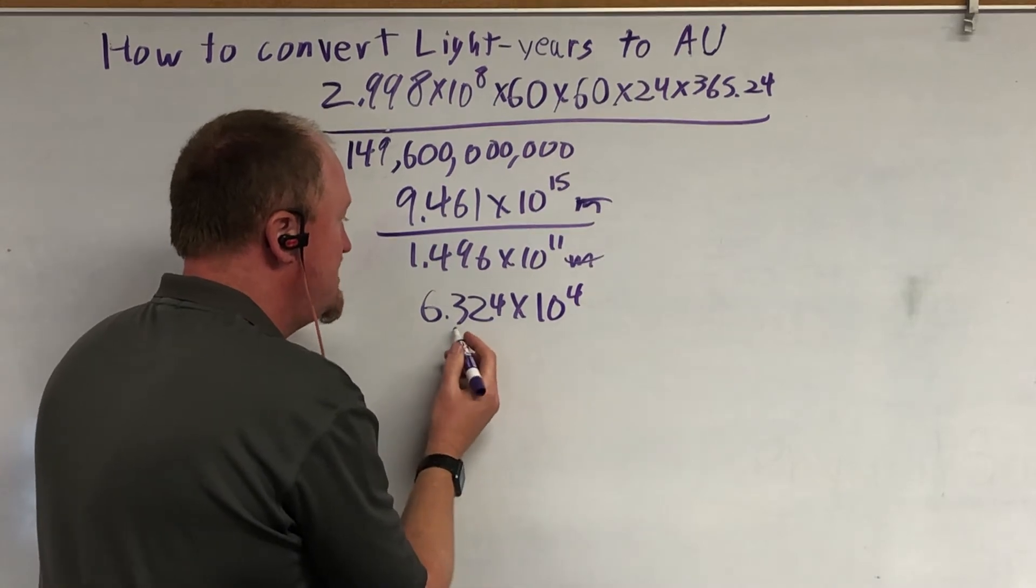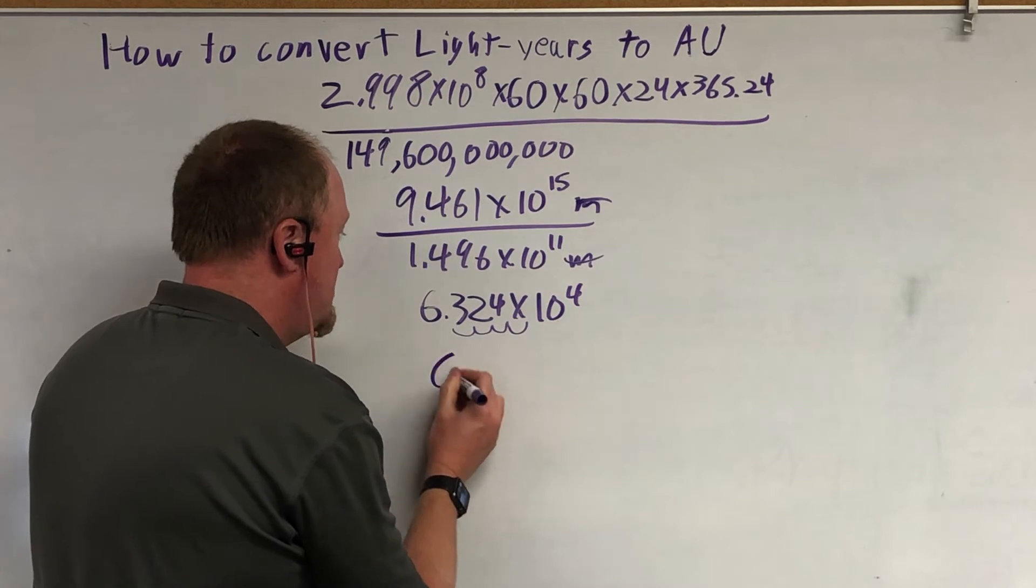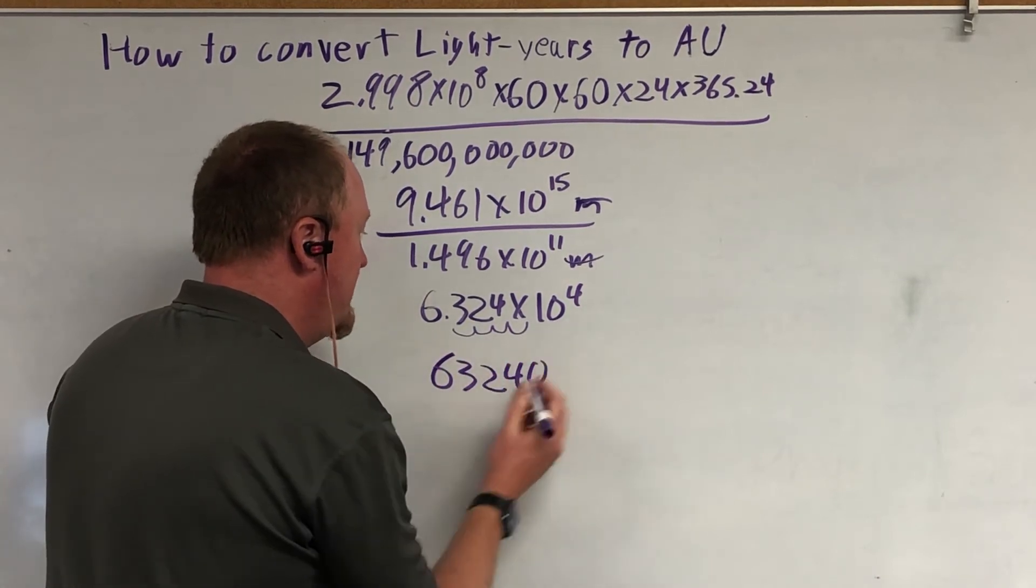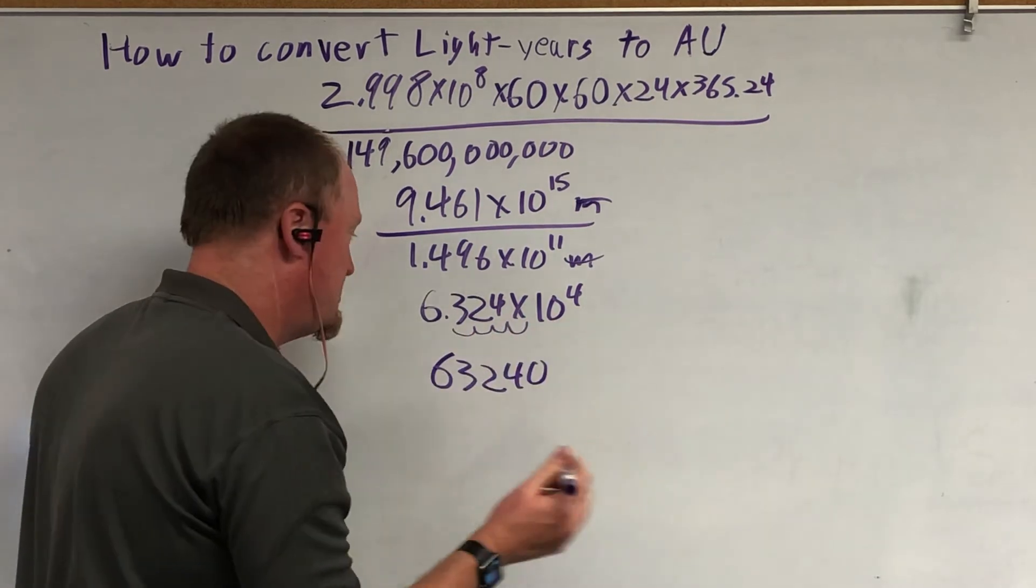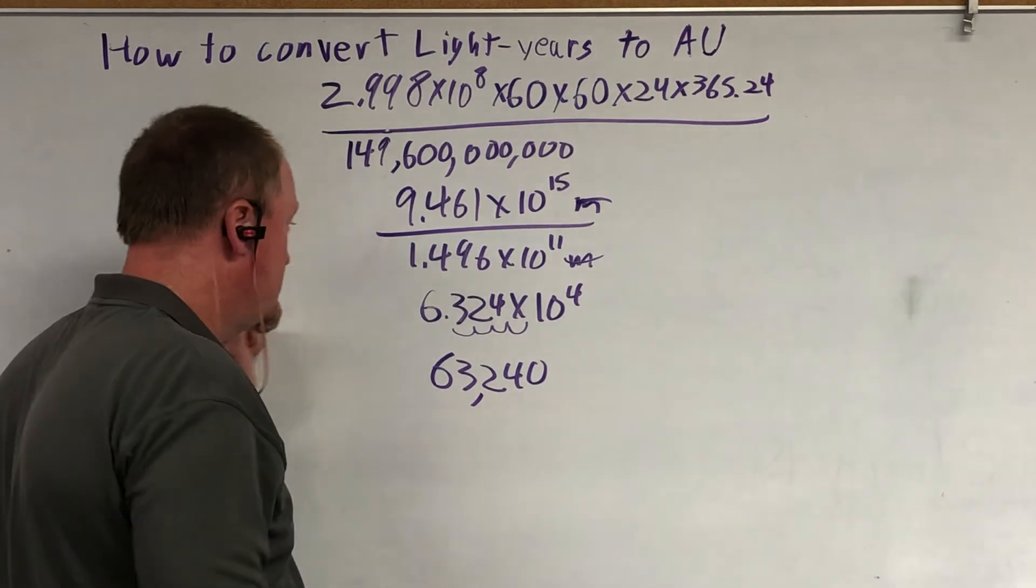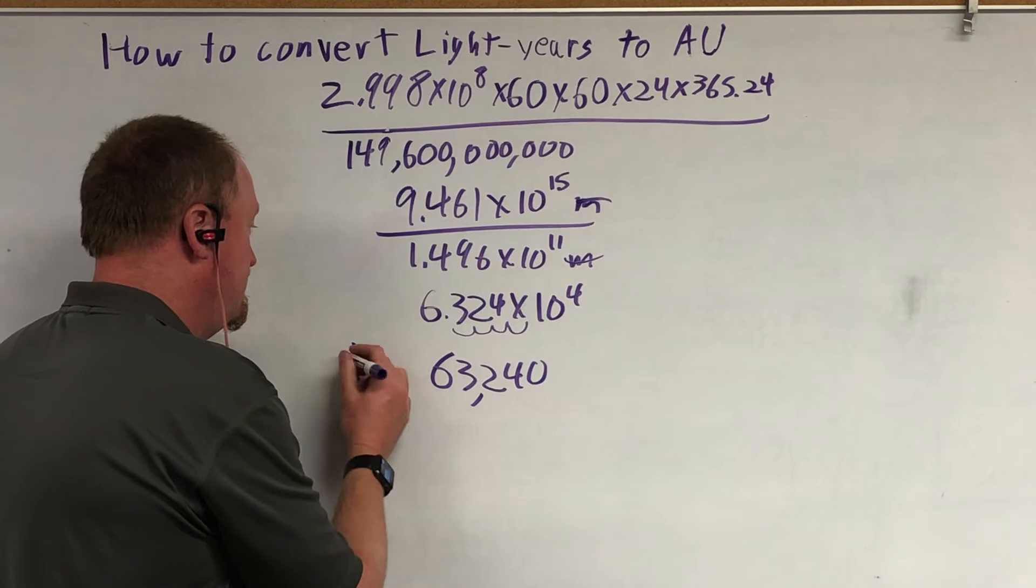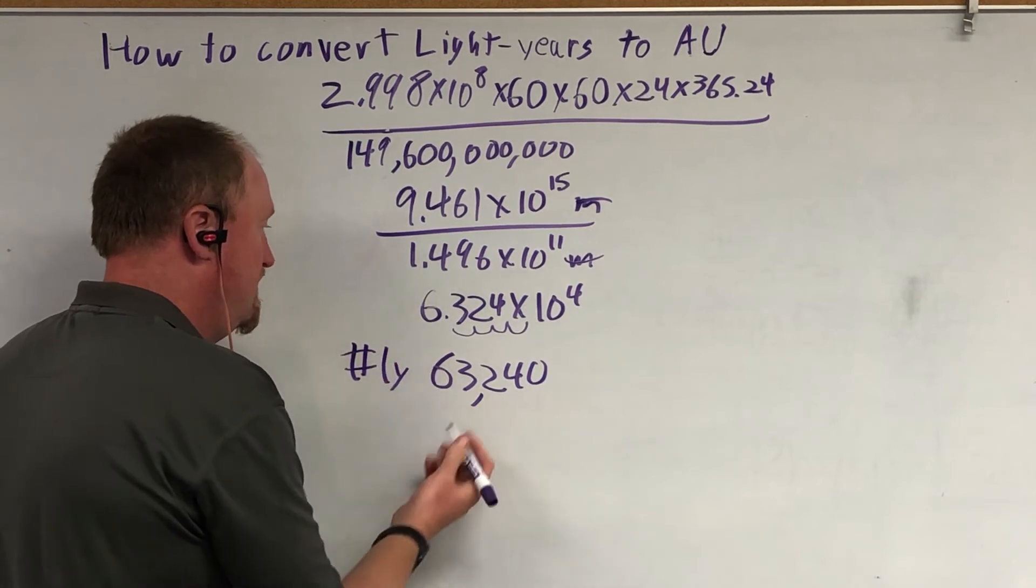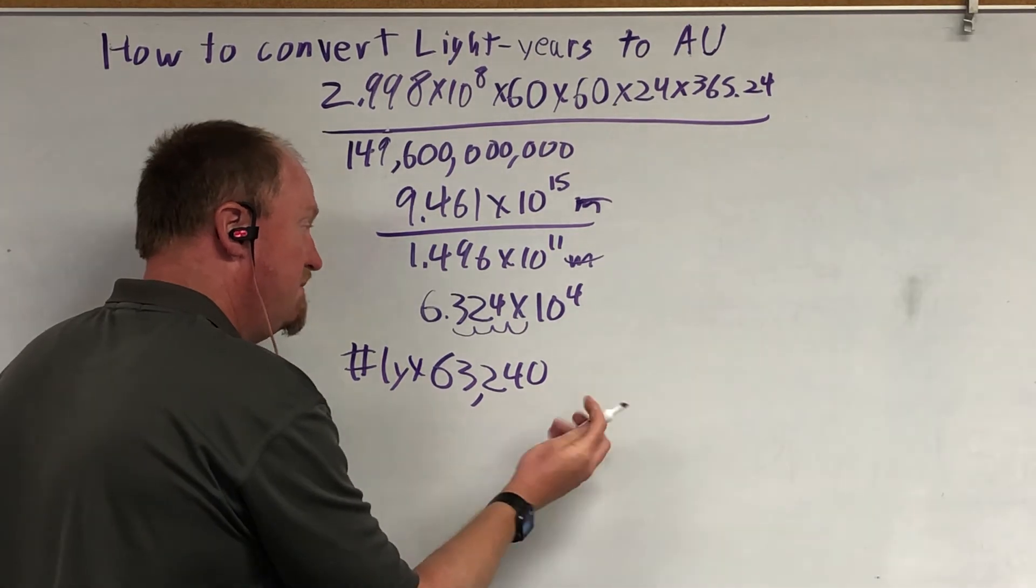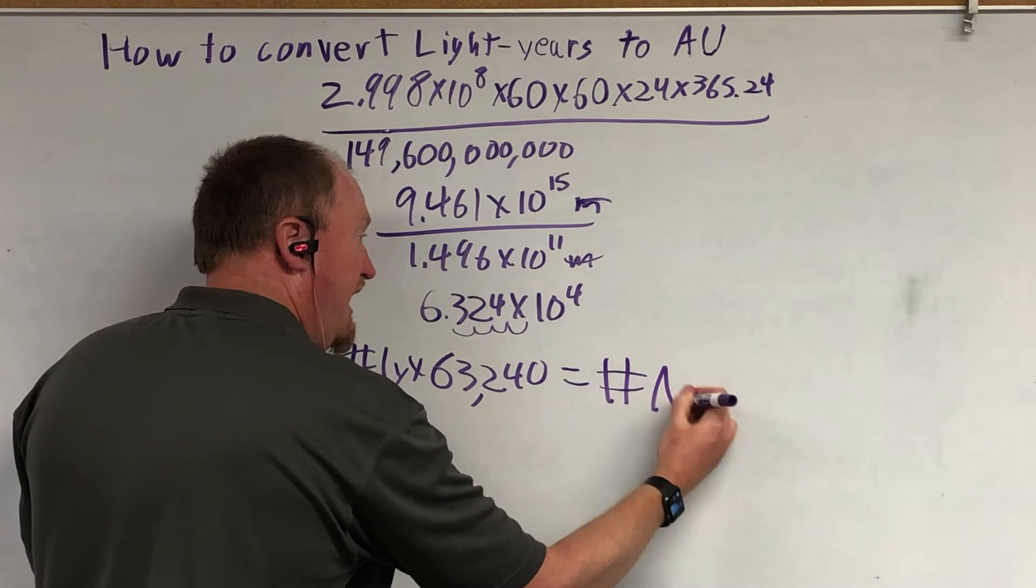So we can basically move the decimal point over 1, 2, 3, 4 places, and we'll get that there are 63,241 light years in an AU. So the number of light years times 63,240 is equal to the number of AU.